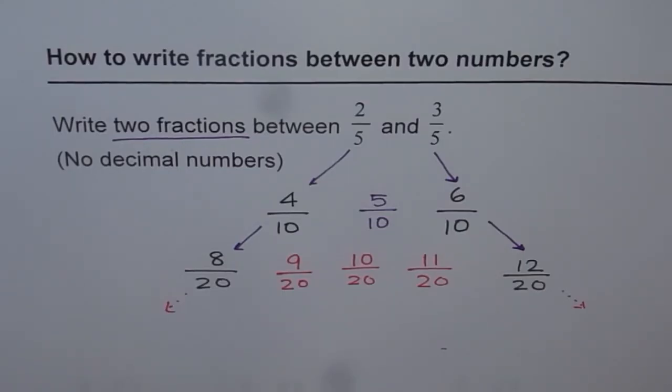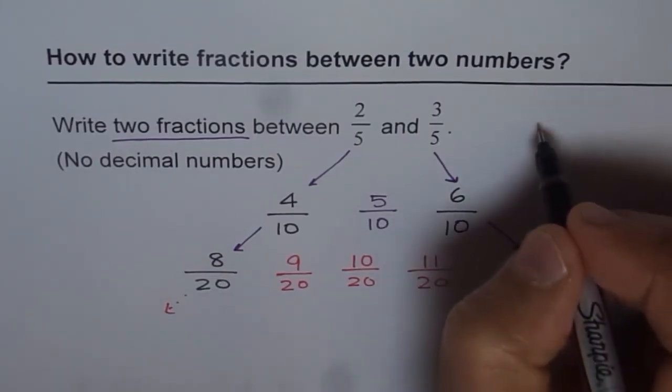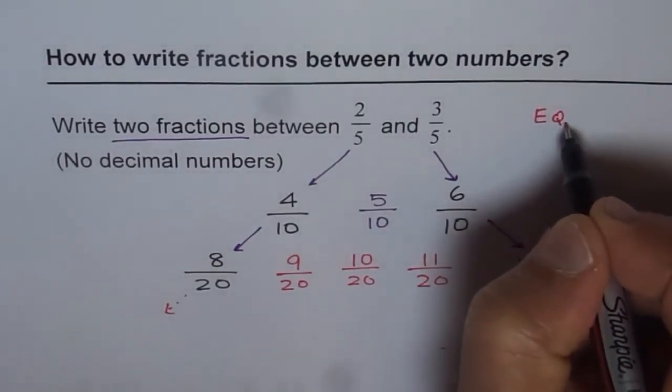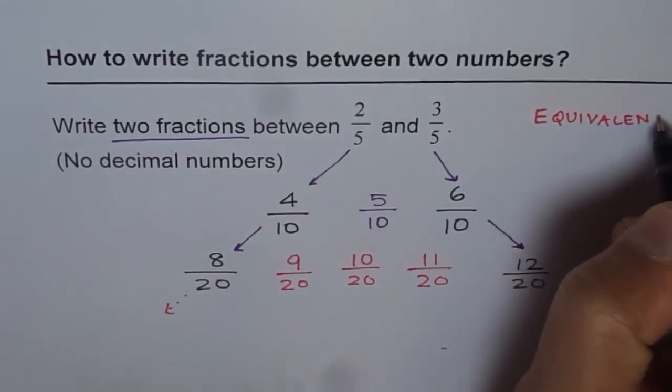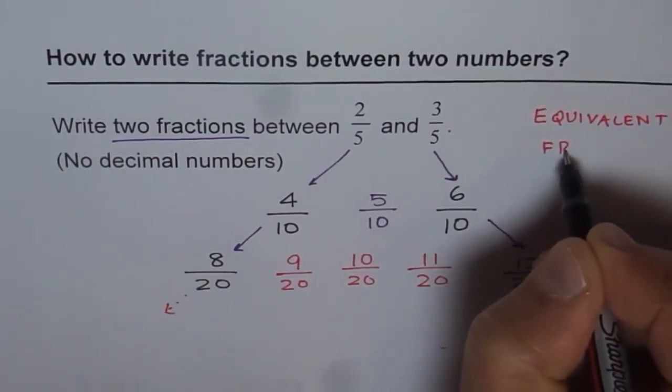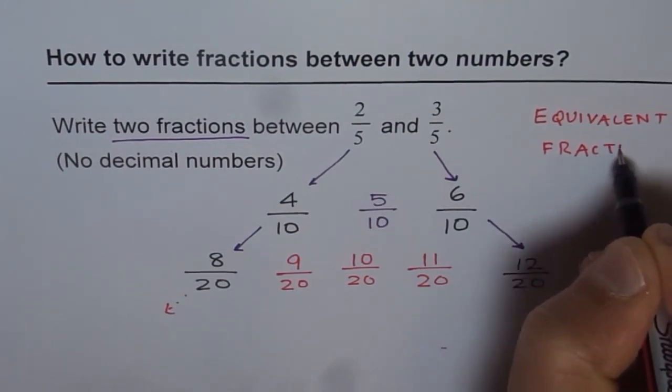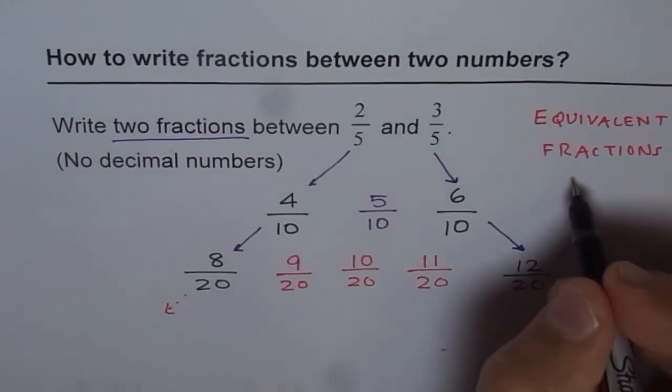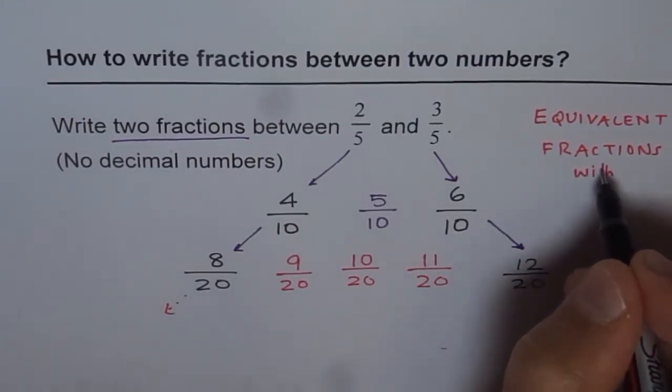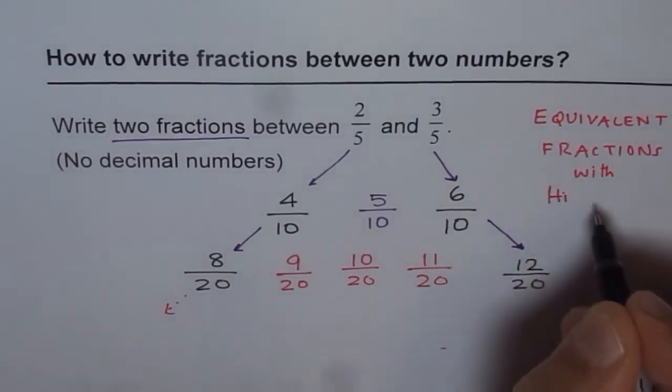So what was the trick involved? Trick is write equivalent fractions with higher denominator. And then you can write many fractions between them with higher denominator.